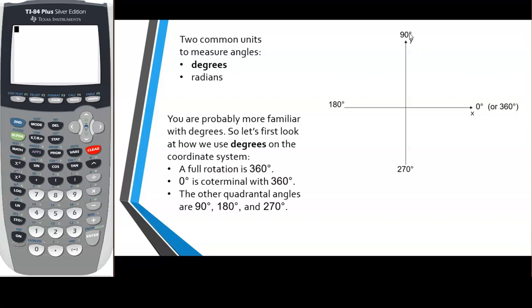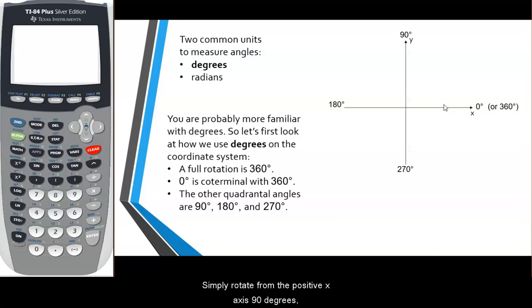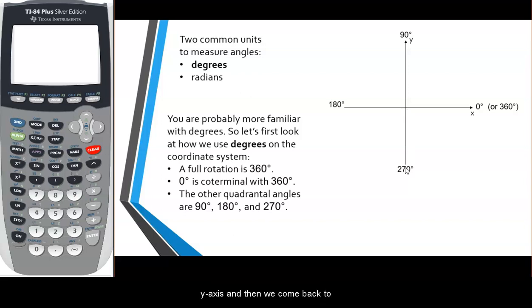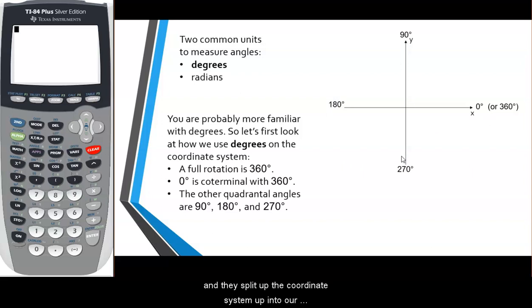90 degrees falls up here on the positive y-axis. If we rotate from the positive x-axis 90 degrees counterclockwise, we land on the positive y-axis. Then if we rotate another 90 degrees — 180 degrees total — we land on the negative x-axis. Another 90 degrees for a total of 270 degrees lands us on the negative y-axis. Then we come back to the 360-degree rotation, which takes us back to the positive x-axis. Those are the quadrantal angles — they split the coordinate system into our quadrants.